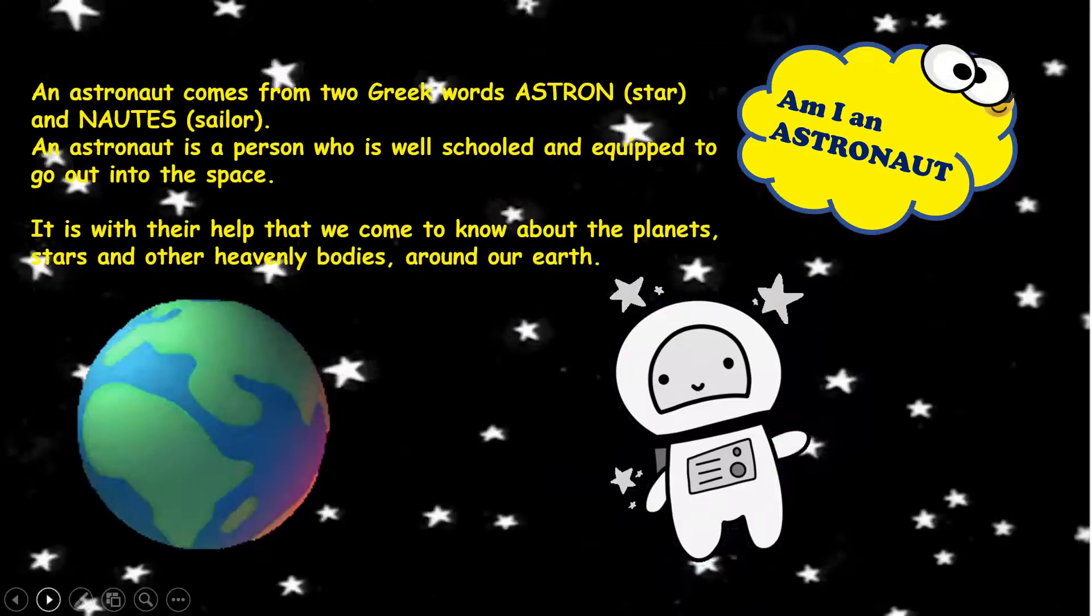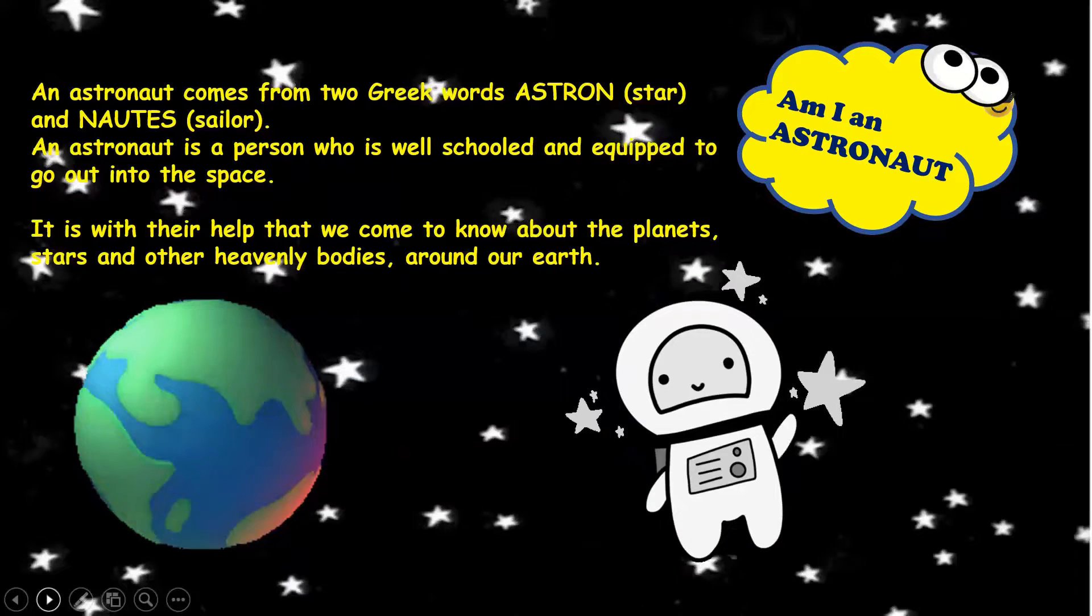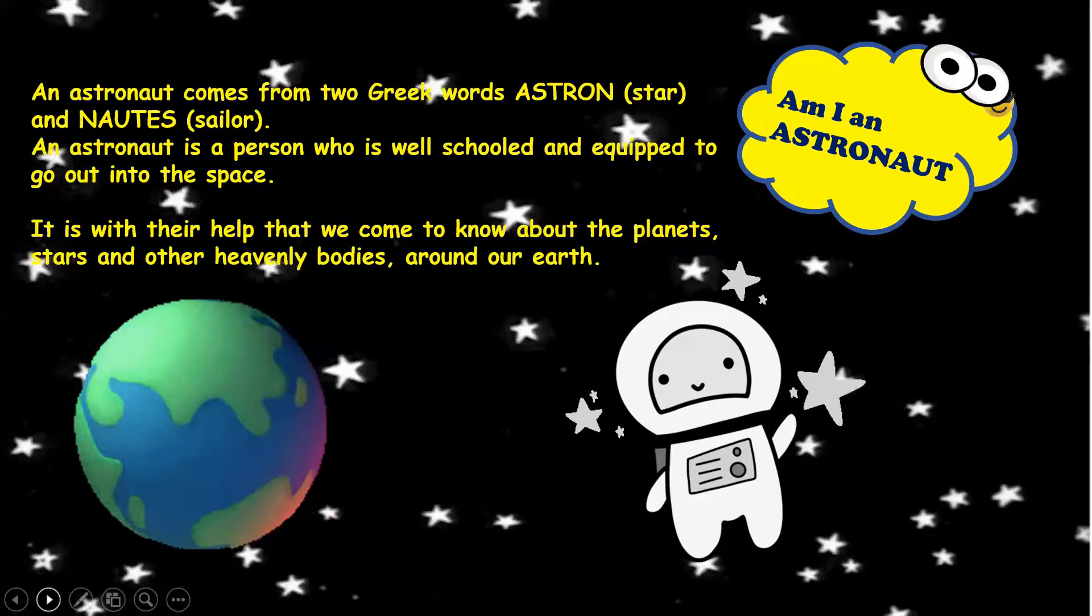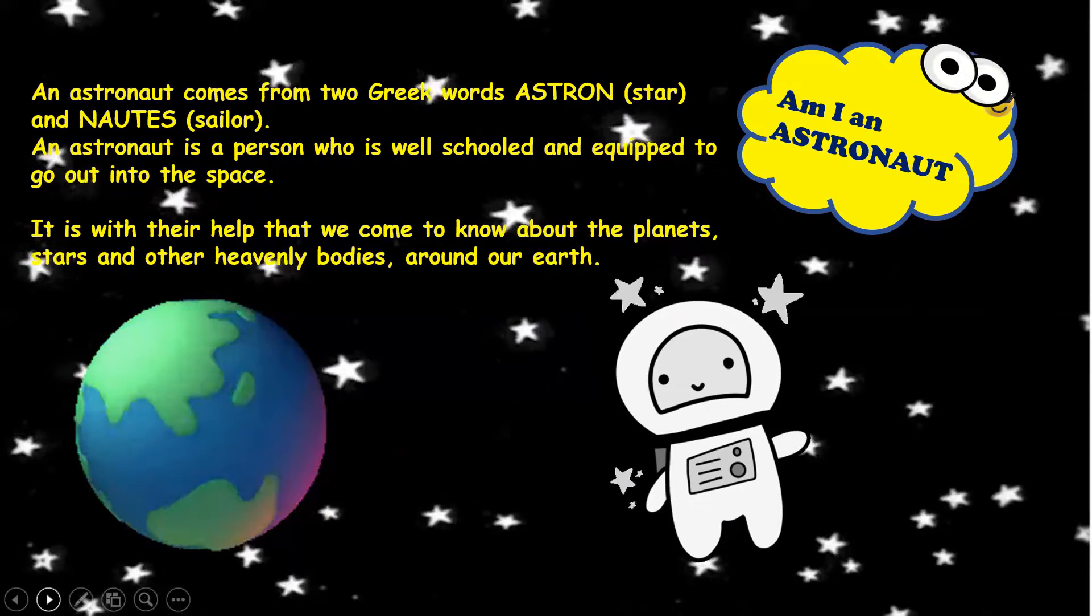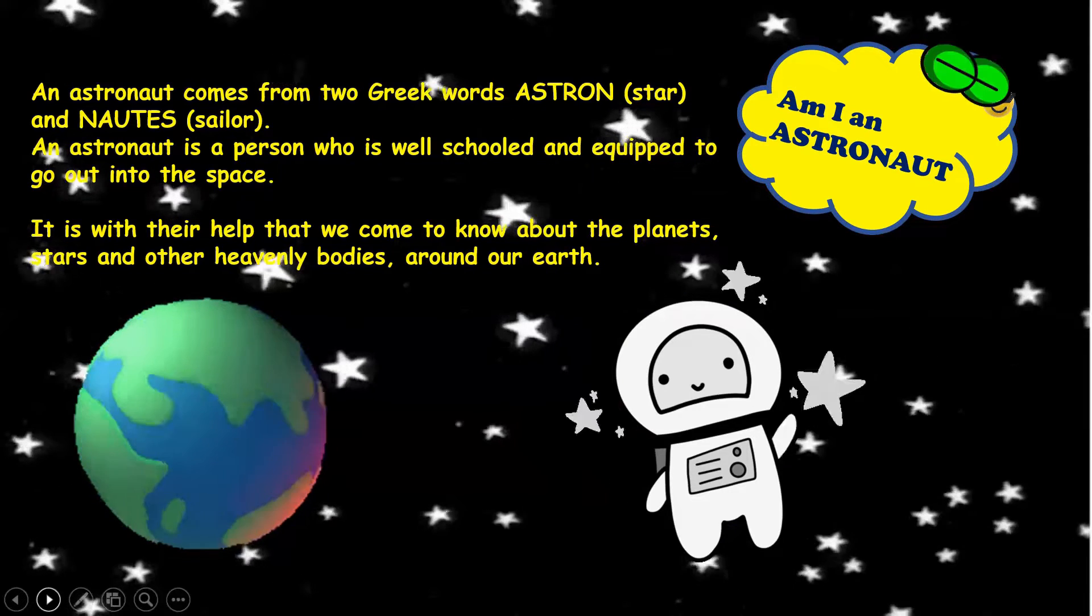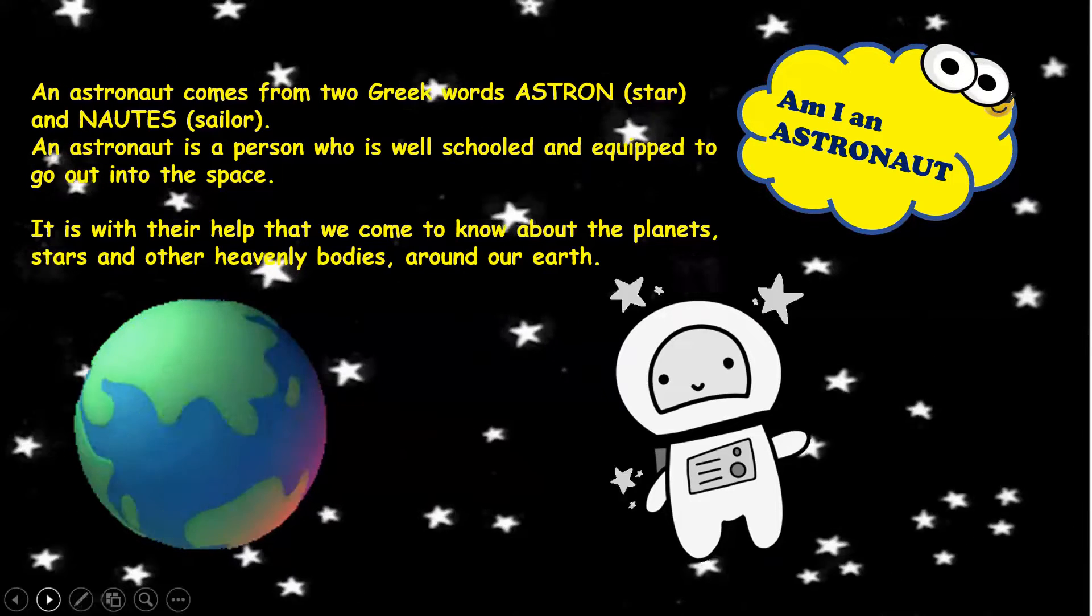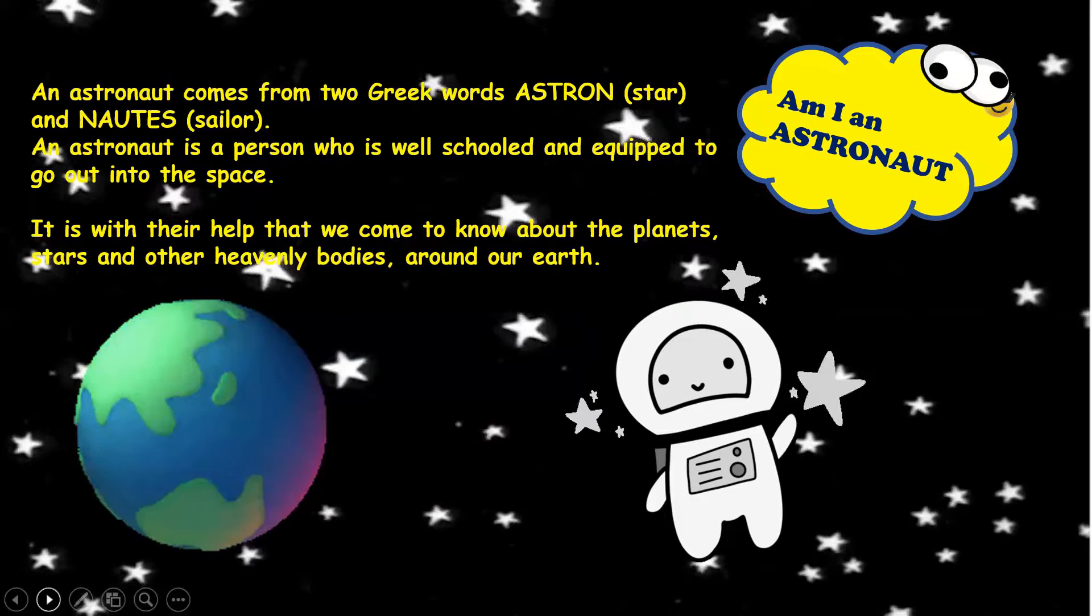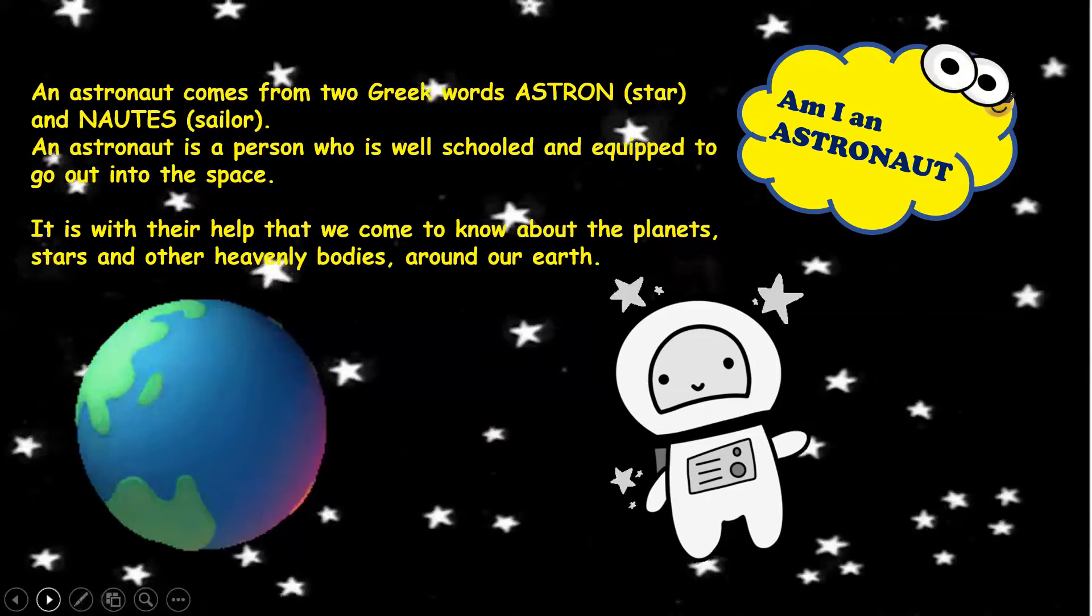An astronaut comes from two Greek words, astron which means star and nautes which means sailor. An astronaut is a person who is well schooled and equipped to go out into the space. It is with their help that we come to know about the planets, stars and other heavenly bodies around our earth.